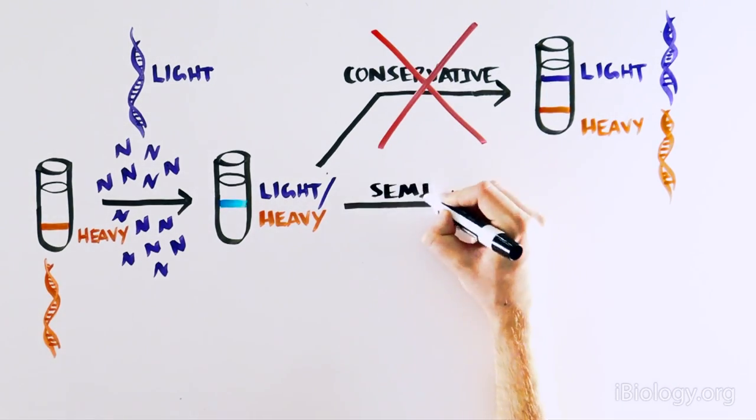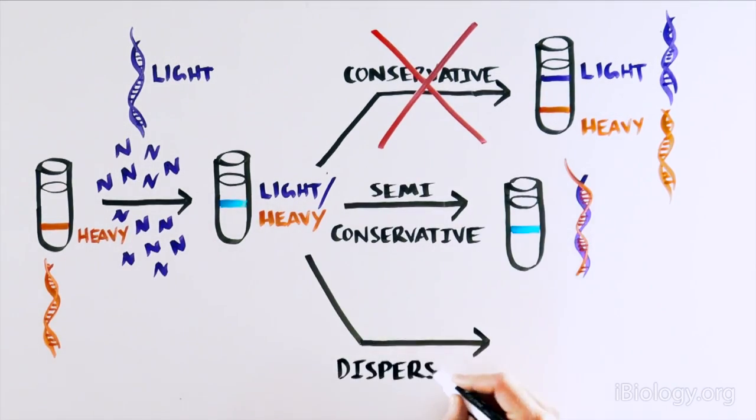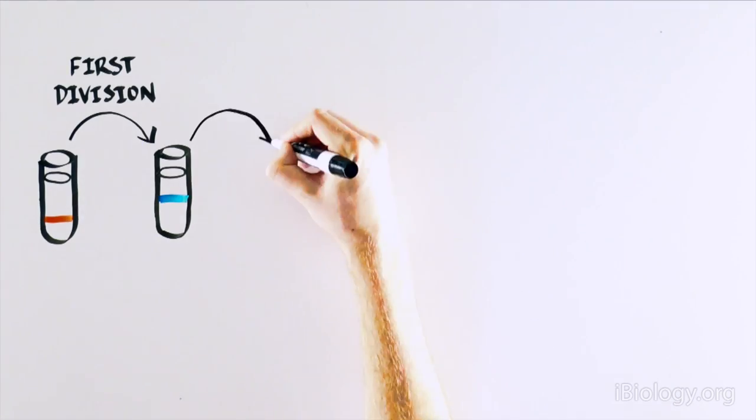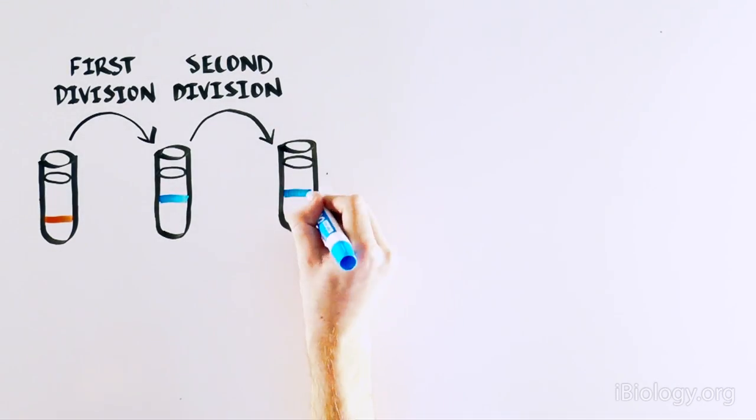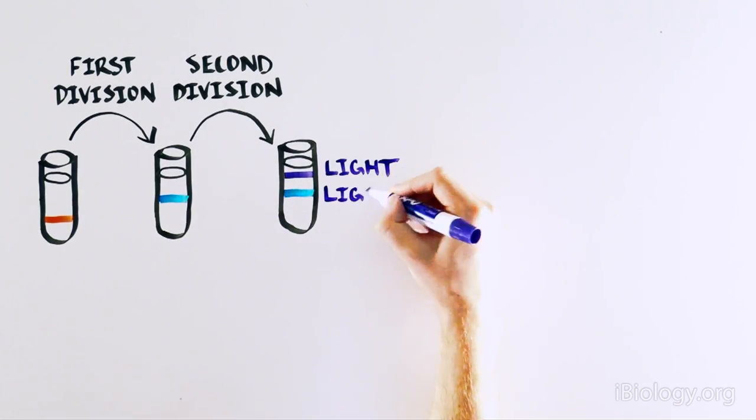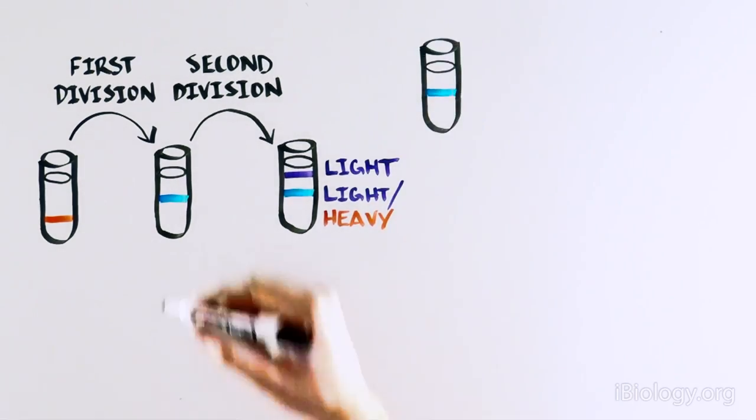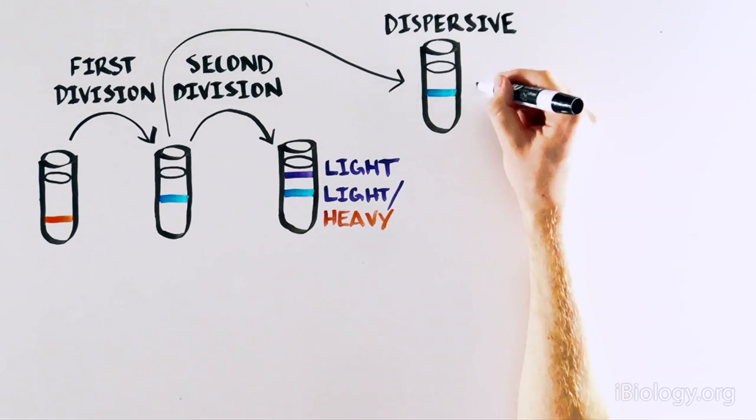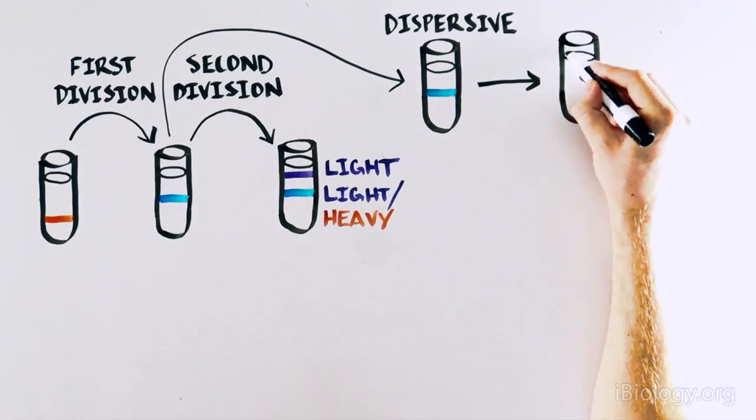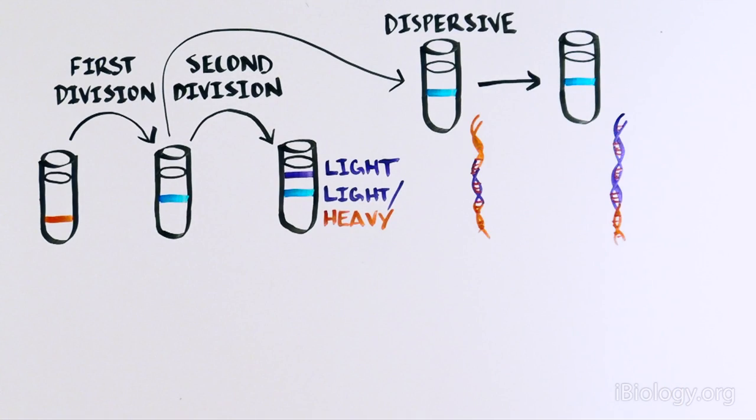However, this is in line with the semi-conservative or the dispersive model. After two cell divisions, the DNA molecule was now either half heavy and half light, or entirely light. So this is now not in line with the dispersive model, which would predict that the DNA after two cell divisions would contain a mixture of heavy and light DNA.